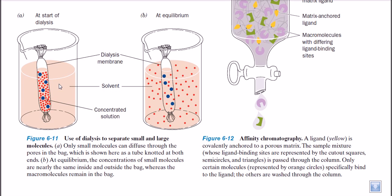Diffusion is very common in nature. For example, room freshener works on this principle. If we add a drop of ink in a bucket of water, the ink starts to diffuse through the whole water and changes its color. In biological systems, diffusion plays a key role in cellular transport — oxygen, carbon dioxide, and other small molecules can easily diffuse through the cell membrane from one place to another.